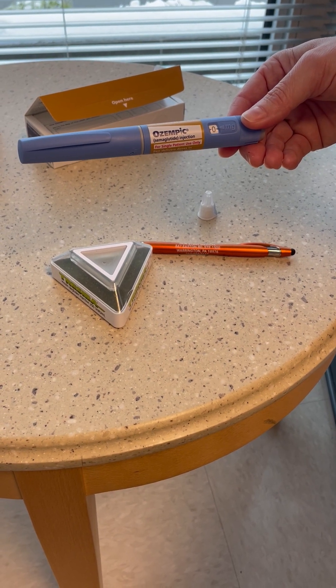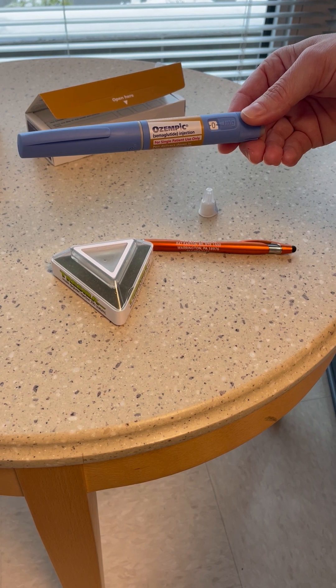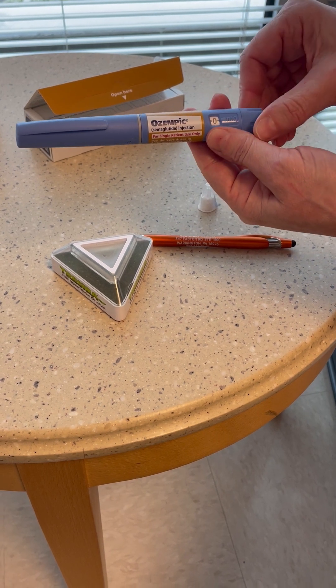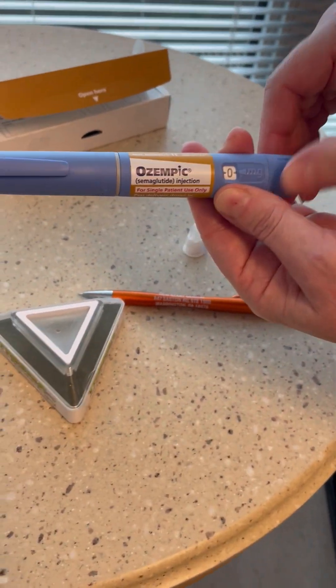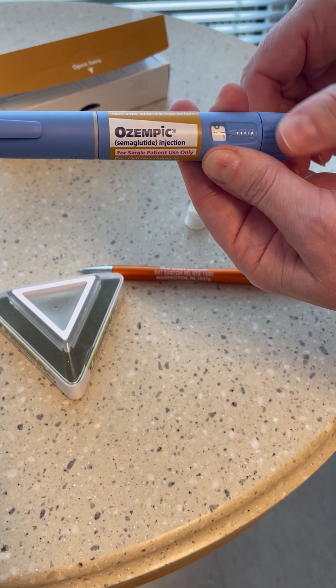This is the two milligram dose Ozempic pen which delivers four doses of two milligrams. We can use this to make smaller doses of 0.5 milligrams by counting 14 dashes on the vertical dial.